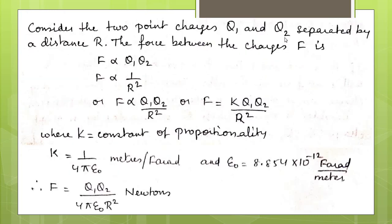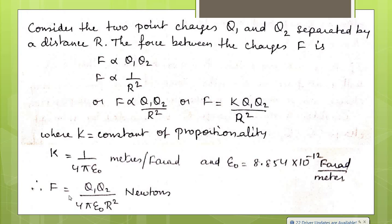Taking two point charges Q1 and Q2 separated by distance R: F is directly proportional to Q1·Q2, and F is inversely proportional to R². Combining these, F ∝ Q1·Q2/R². Removing the proportionality sign: F = K·Q1·Q2/R², where K = 1/(4πε₀). Here, ε₀ is the absolute permittivity of free space, equal to 8.854 × 10⁻¹² farads per meter. Substituting K, we get F = Q1·Q2/(4πε₀R²) newtons.